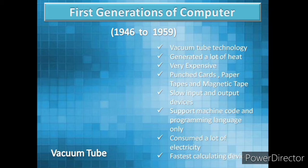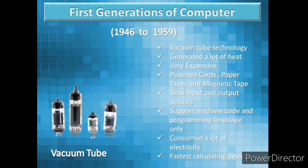The first generation of computers was between 1946 to 1959. Computers of the first generation used vacuum tube technology. These tubes are like electron bulbs, which generated a lot of heat, and therefore they were very expensive. In this generation of computers, batch processing operating system was mainly used.